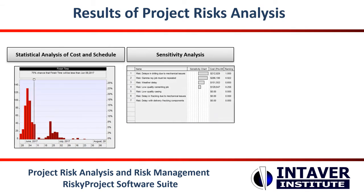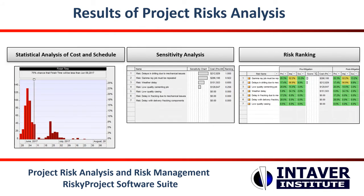Sensitivity analysis or tornado charts indicates which activity or risk parameters have the most potential to impact a project schedule. And finally, risk ranking — risks are ranked by their potential impact on a project schedule or cost.